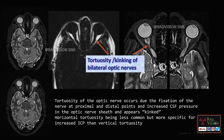Next: there is tortuosity or kinking of the optic nerves. Tortuosity can be horizontal — that is, along the axis of the optic nerve — or vertical, which is perpendicular to the axis of the optic nerve. Tortuosity occurs because the optic nerve is fixed at its proximal and distal parts, and increased CSF pressure in the optic nerve sheath causes kinking or tortuosity. Horizontal tortuosity is less common but more specific for increased ICP than vertical tortuosity.